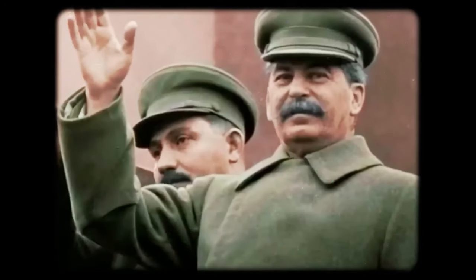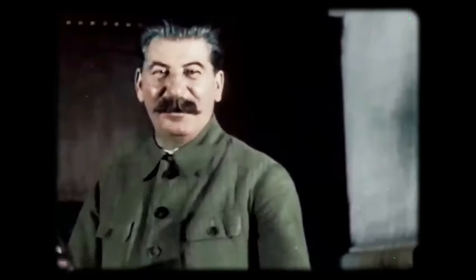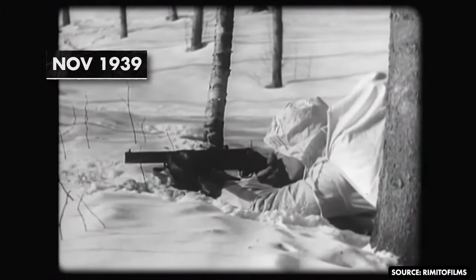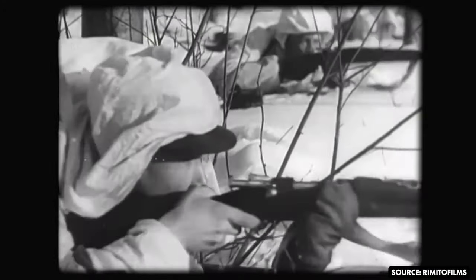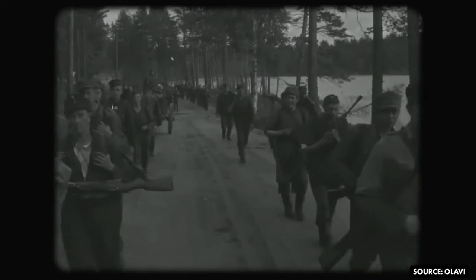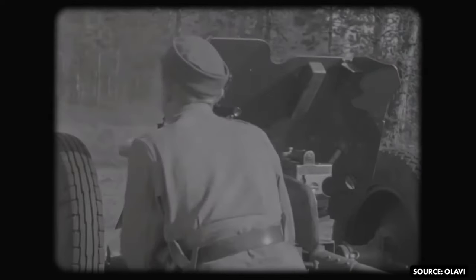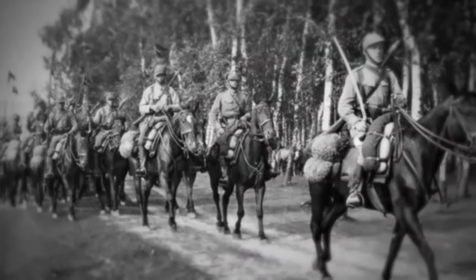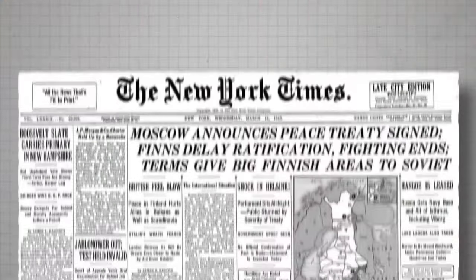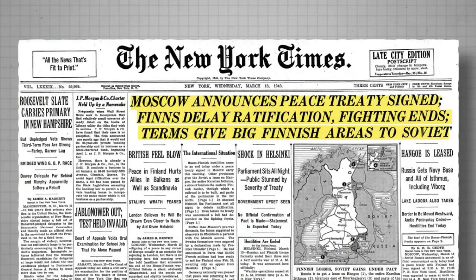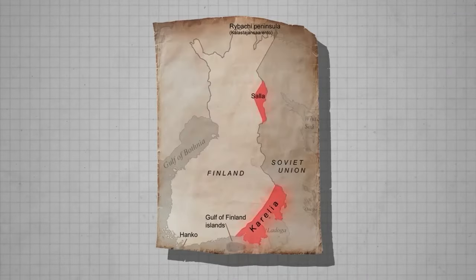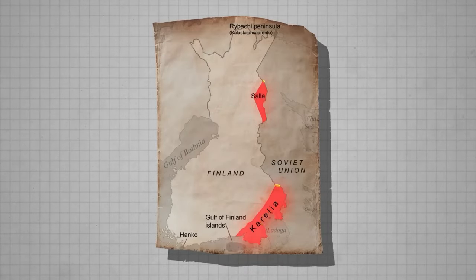This was an imbalanced war — the Soviet Union's army was much larger than Finland's and had better equipment too. But this war lasted for more than two months, and the Soviets couldn't gain much. Finally, in March 1940, the battle was over and the Moscow Peace Treaty was signed. According to it, 11% of Finland's land would be handed over to the Soviet Union.